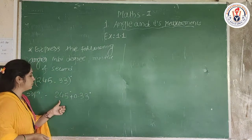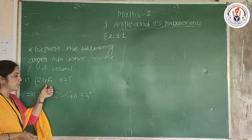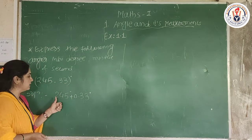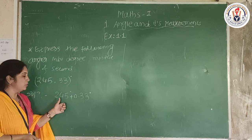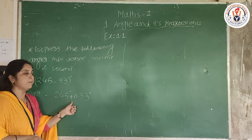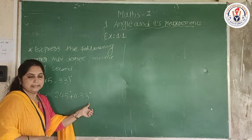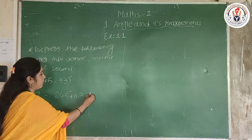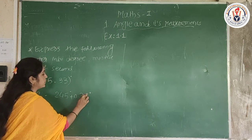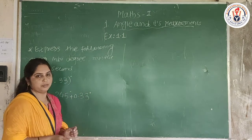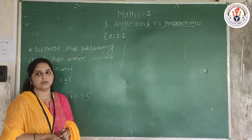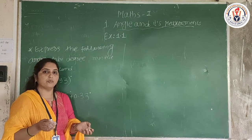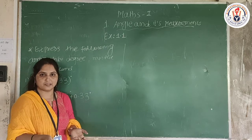So we have 245.33 degrees. Now I will take a look at 245 degrees plus 0.33 degrees. We need to convert this fractional degree part into minutes. To convert degrees to minutes, we have to multiply it by 60.